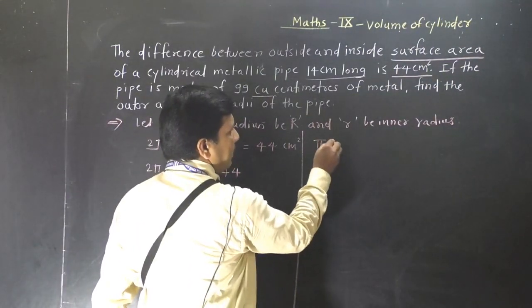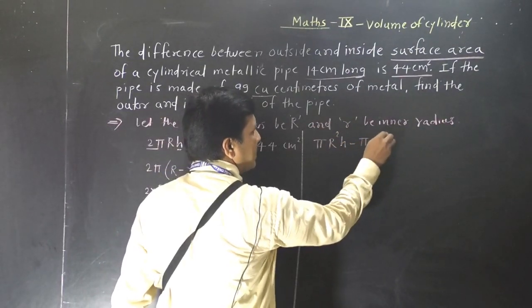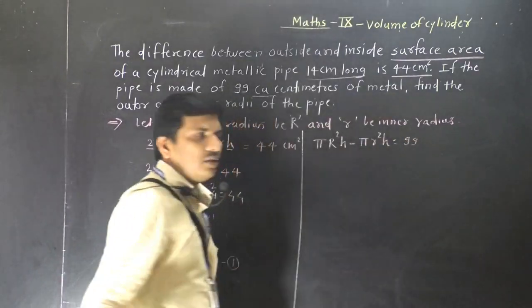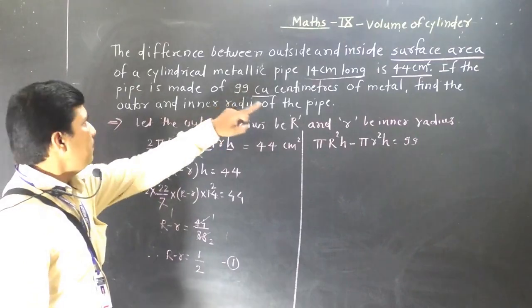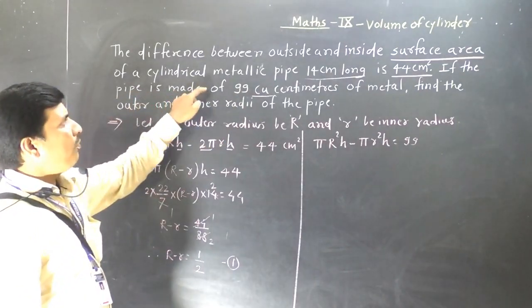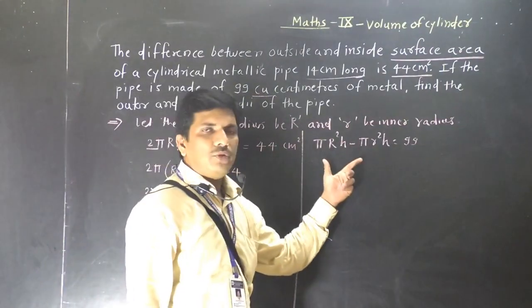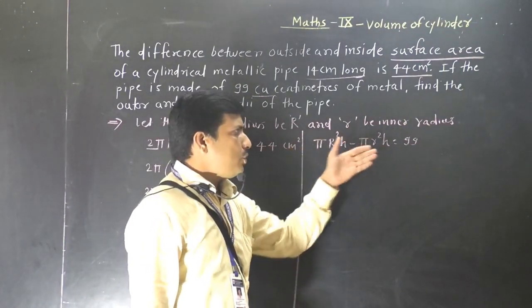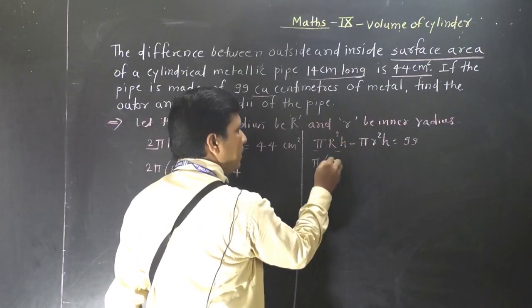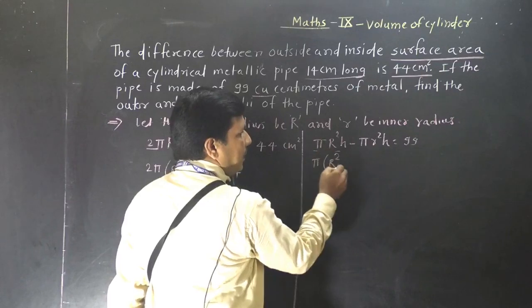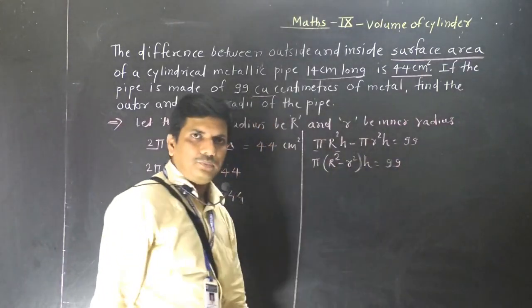So: π capital R square times h minus π small r square times h equals 99. This is our second equation. For this hollow cylinder we find the difference between two volumes. Taking π and h as common: π (capital R² minus small r²) times h equals 99.